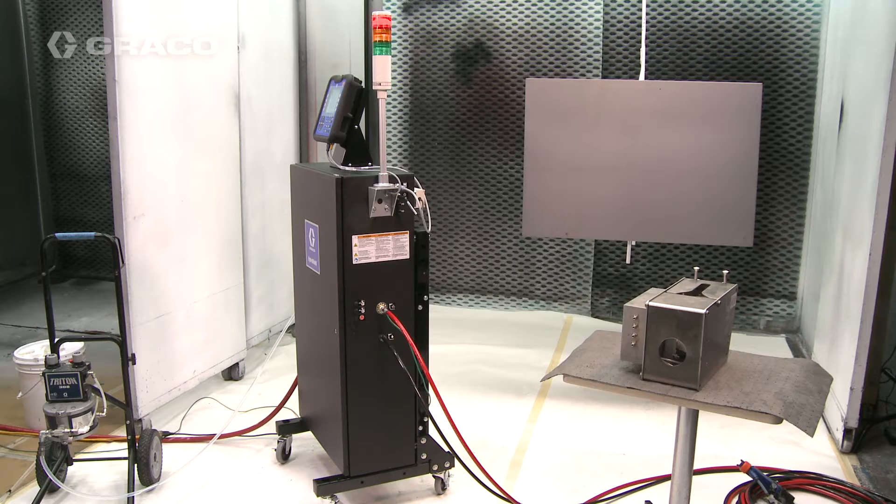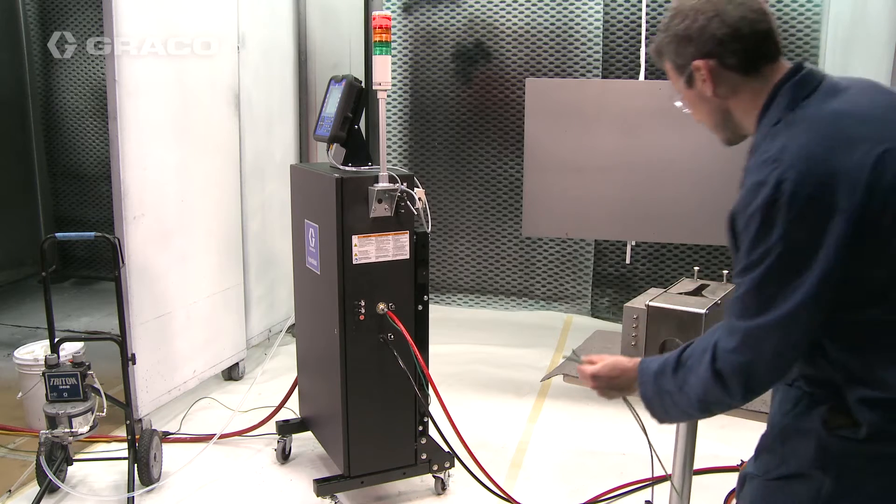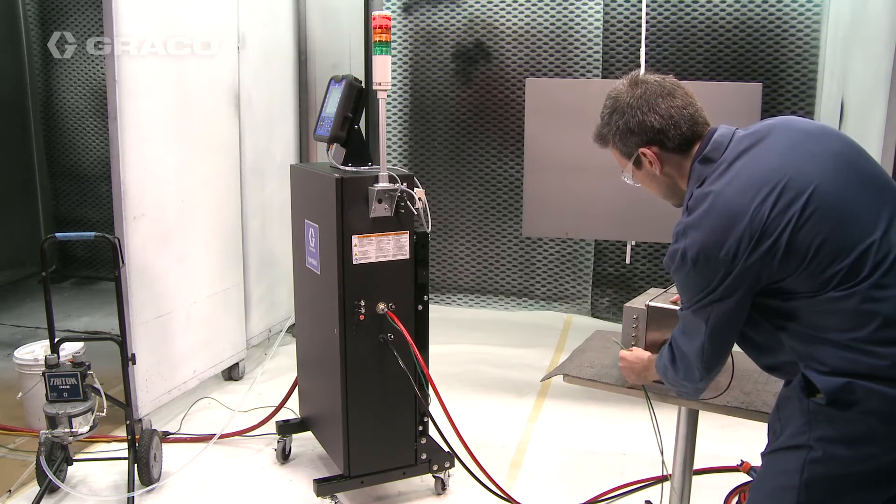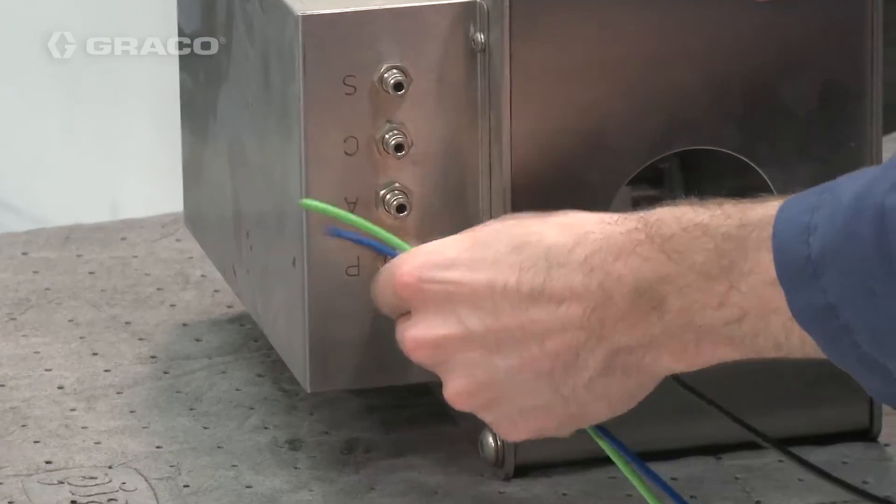If you'll be using a gun flush box with your HydroShield system, you'll need to connect air supply to port P on the gun flush box.